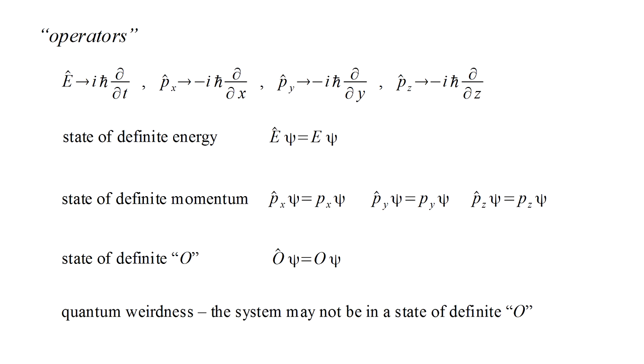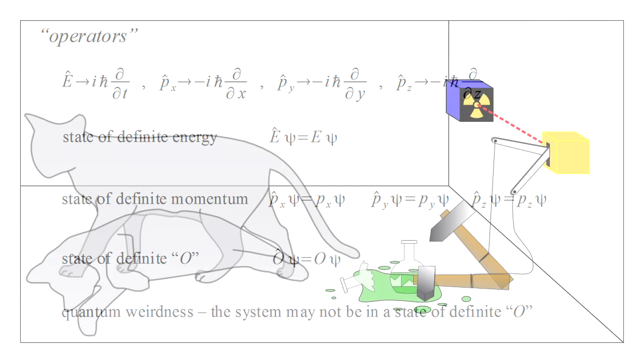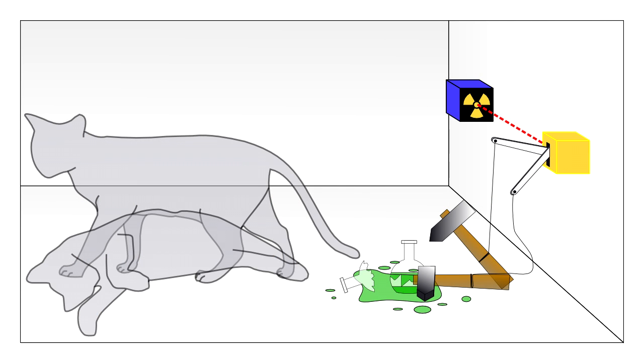An important aspect of quantum weirdness is that the system need not be in a state of definite O. This happens when the operator gives you anything other than a scaled version of the wave function. A classic example that we'll treat in a future video is Schrodinger's cat and the observable whether the cat is alive or dead.